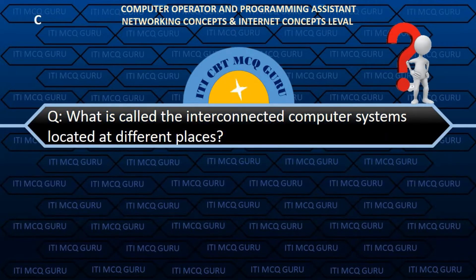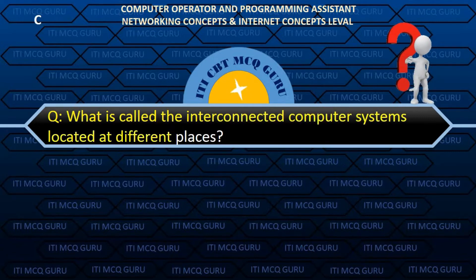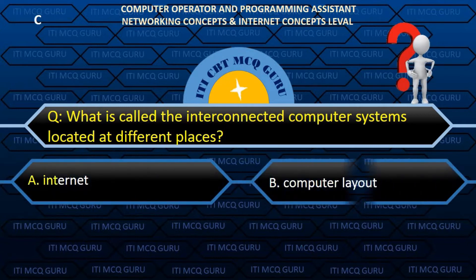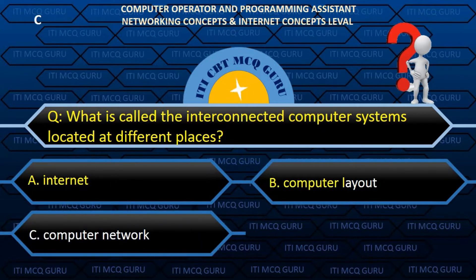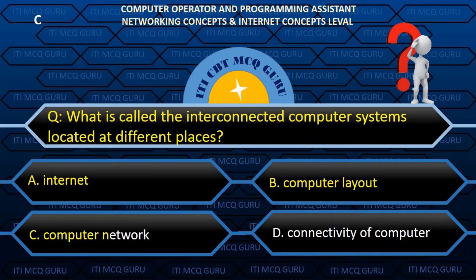What is called the interconnected computer systems located at different places? C. Computer network.